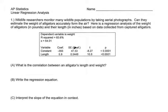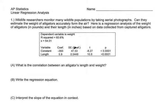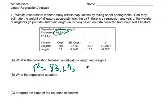Let's turn the page over and look at this. What is the correlation between an alligator's length and weight? Look right here: r squared is 83.6 percent, so r is going to be equal to the square root of 0.836, so r is equal to 0.914.